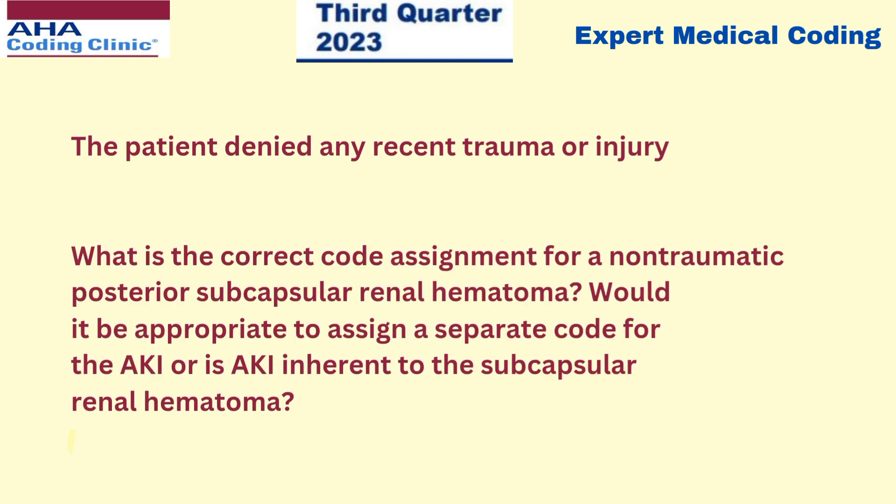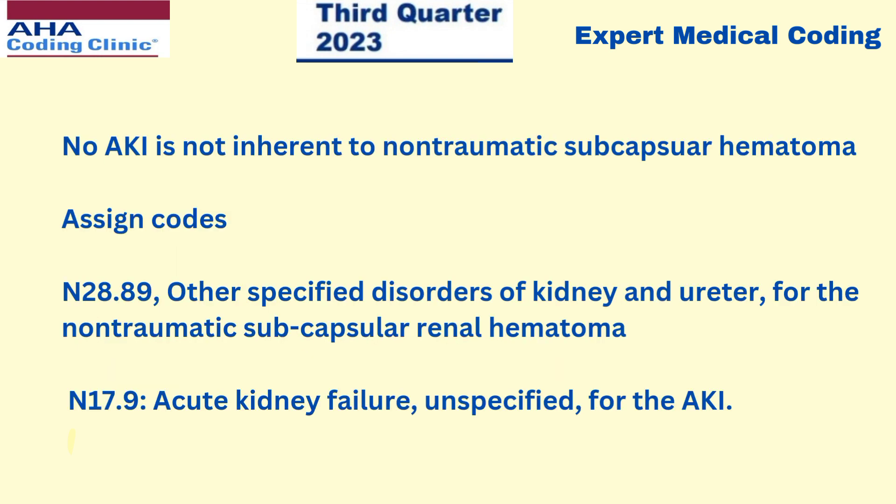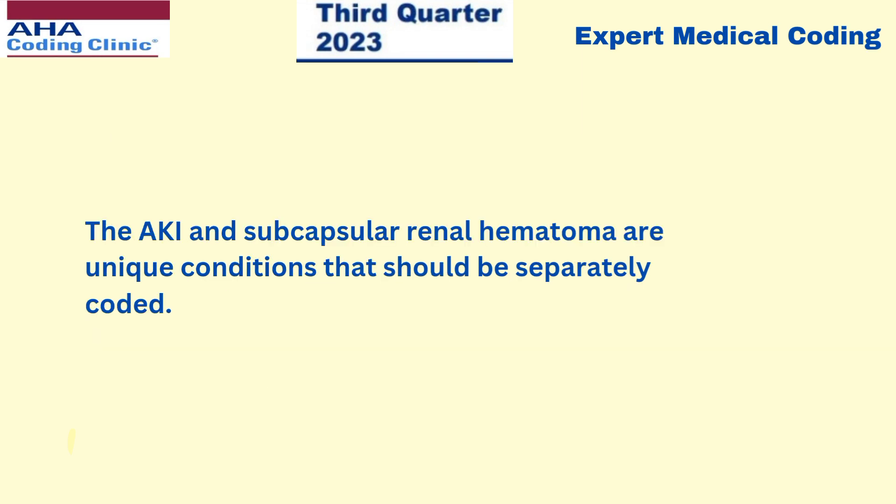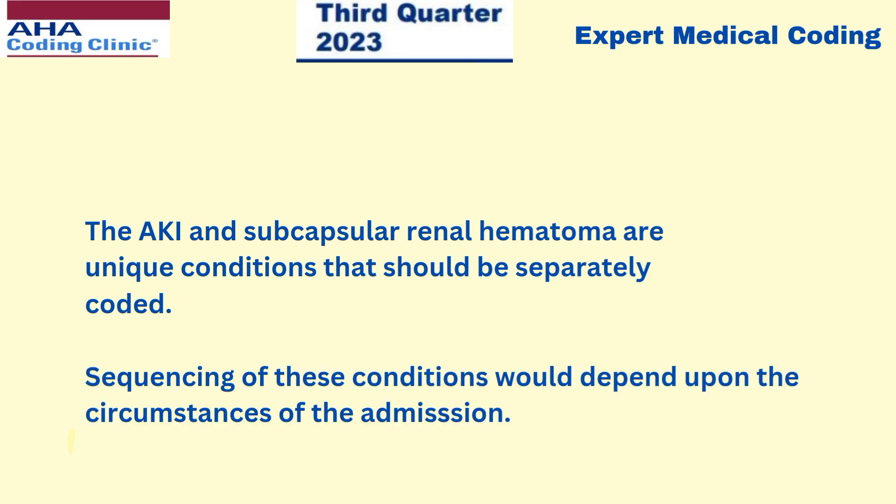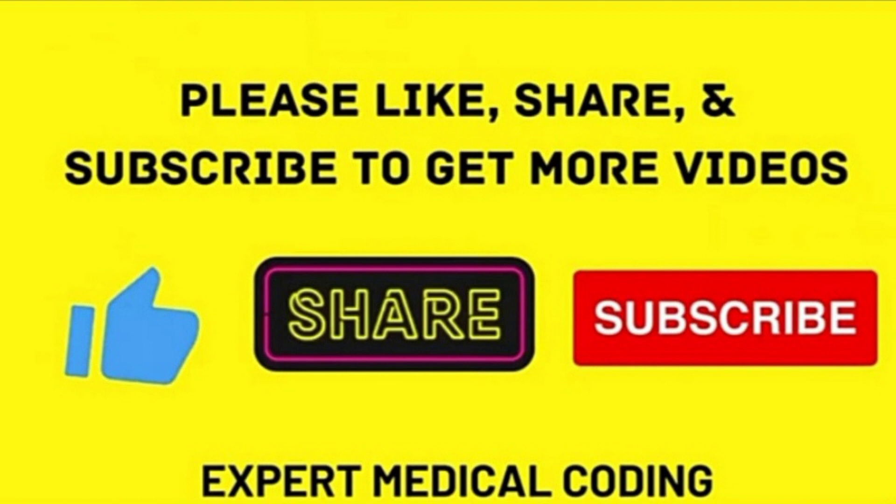The question is: what is the correct code assignment for a non-traumatic posterior subcapsular renal hematoma? Would it be appropriate to assign a separate code for AKI, or is AKI inherent to the subcapsular renal hematoma? The answer is no - AKI is not inherent to non-traumatic subcapsular hematoma. We have to assign both codes: N2889 for the non-traumatic subcapsular hematoma and N179 for the acute kidney failure. Both codes should be assigned, as AKI and subcapsular hematoma are unique conditions that should be separately coded. Sequencing of these conditions would depend upon the circumstances of the admission and the procedure.